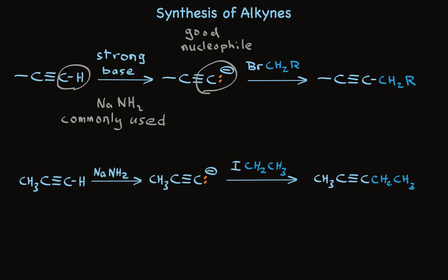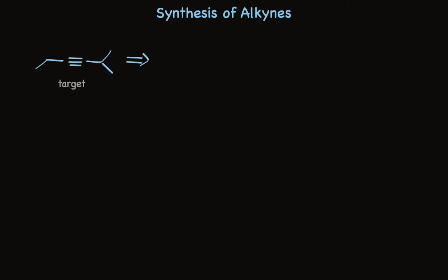Let's take a look at a couple of additional examples of synthesis of alkynes. Suppose we want to make this alkyne a disubstituted acetylene. We could consider doing it by transforming an alkene into the alkyne.